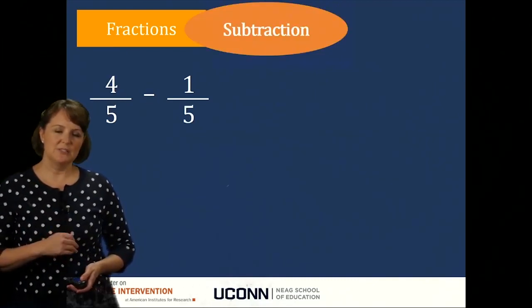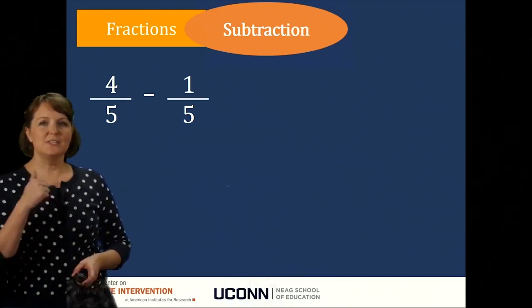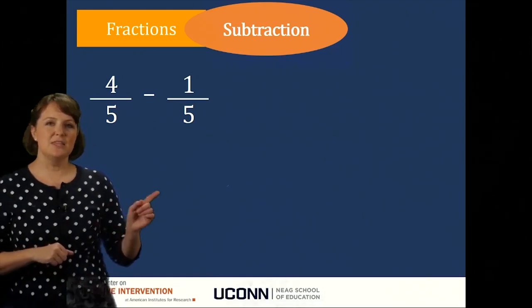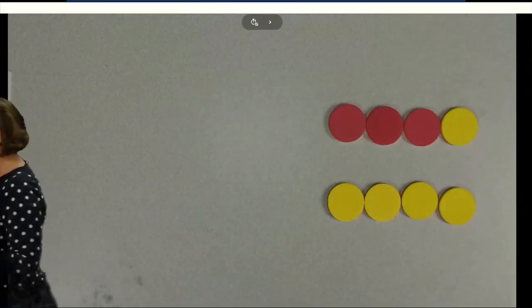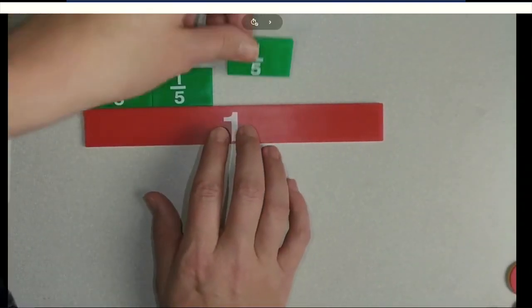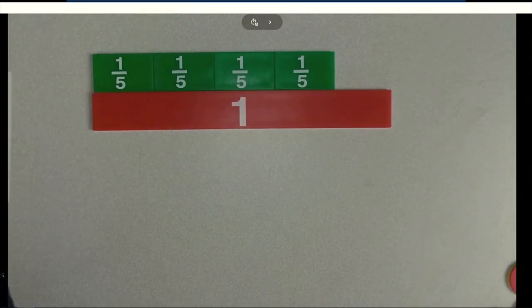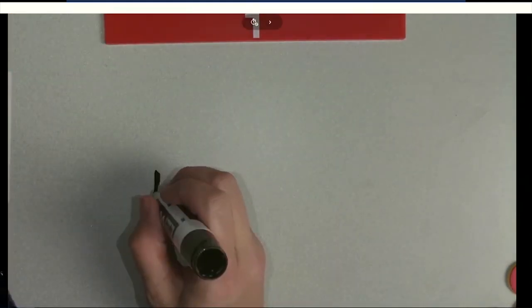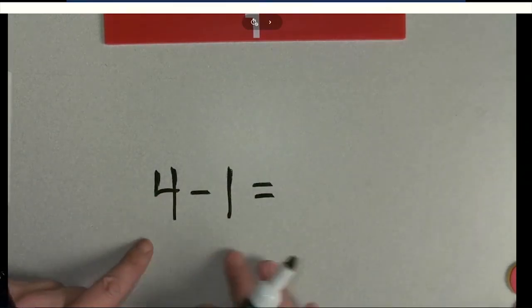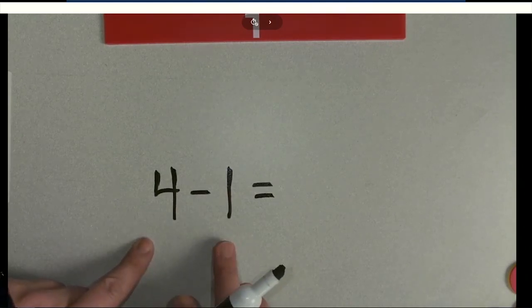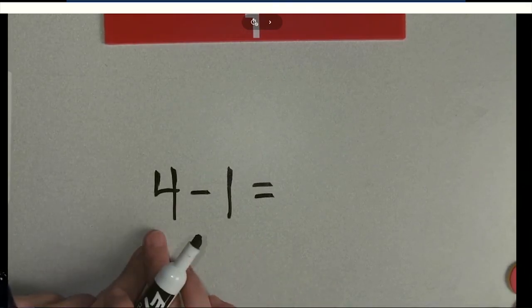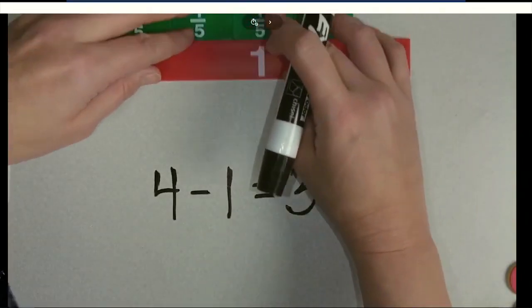So now let's think about subtracting fractions. Let's do this one: four-fifths minus one-fifth. I want to always talk with students about how fraction computation is similar to whole number computation. Let's talk about the problem four minus one. If we solve this with whole numbers, I have four and I think about this as taking away one — four take away one is three. We do the same thing with fractions.